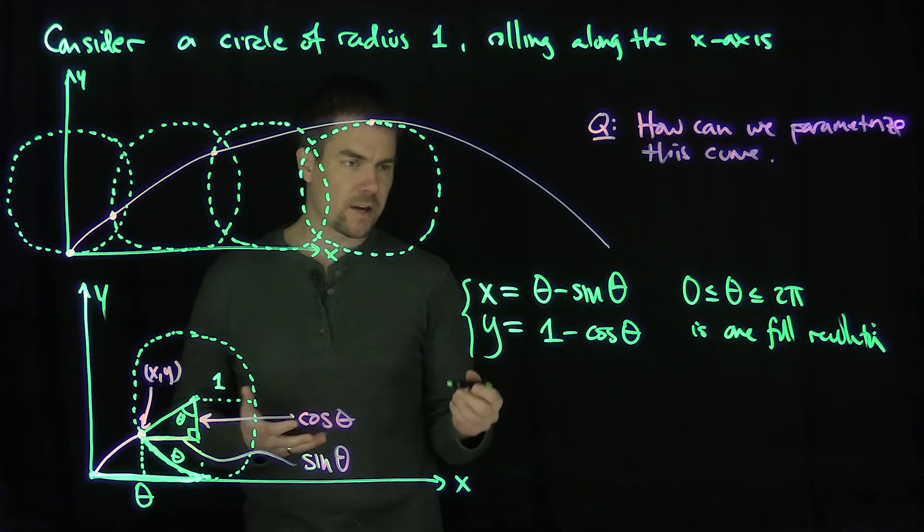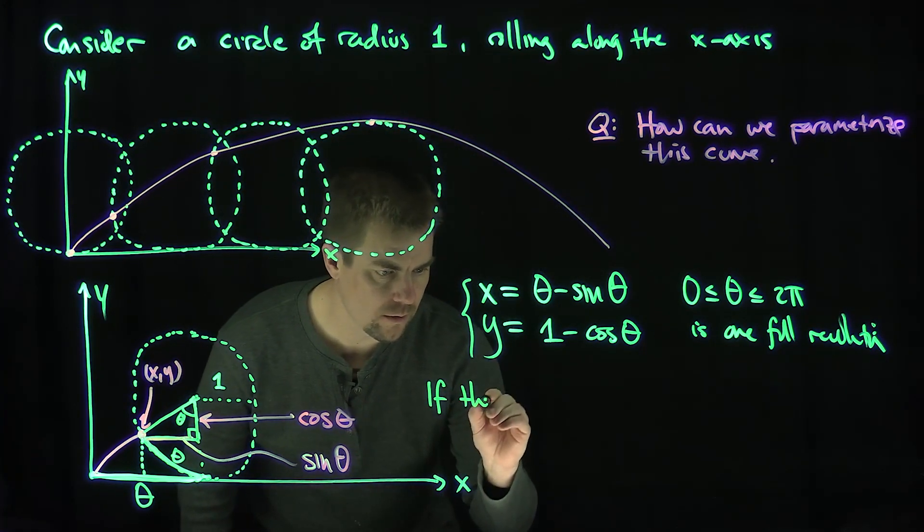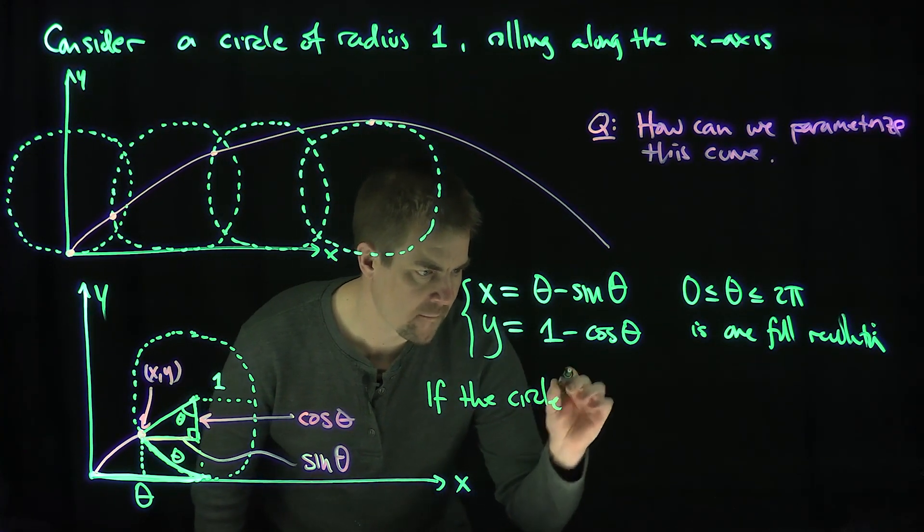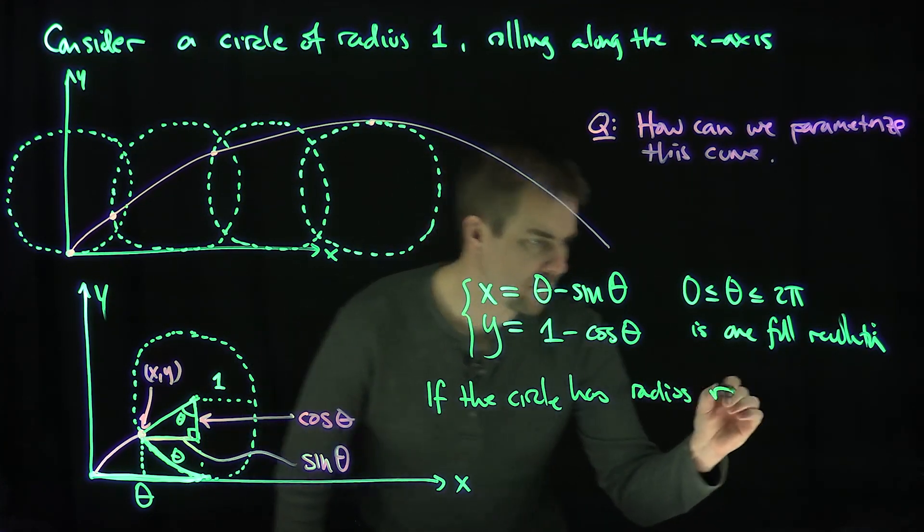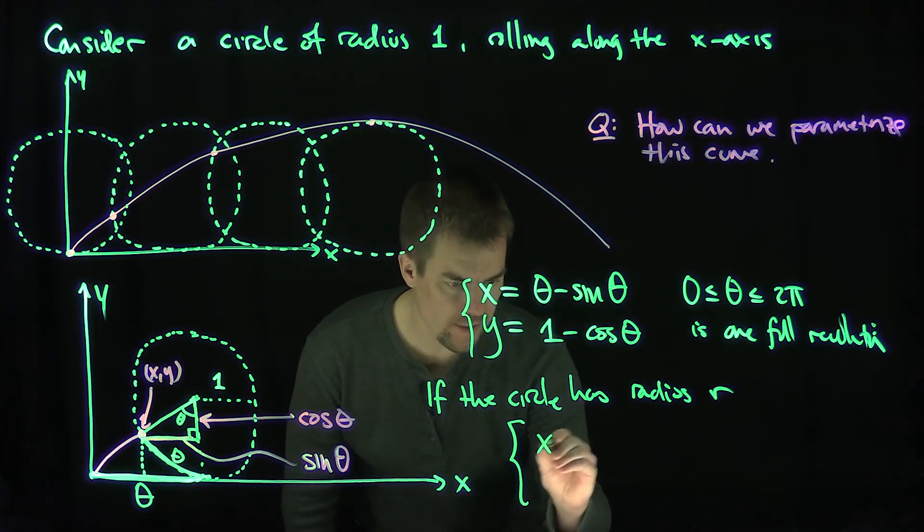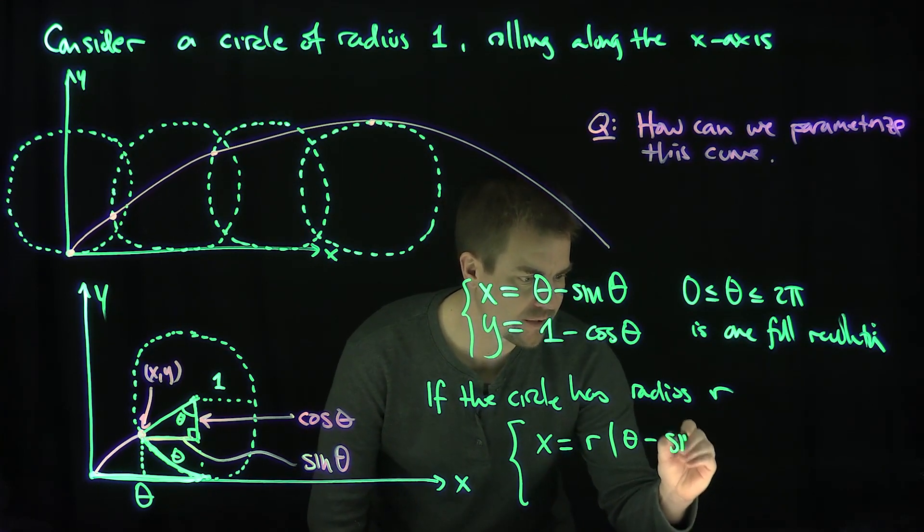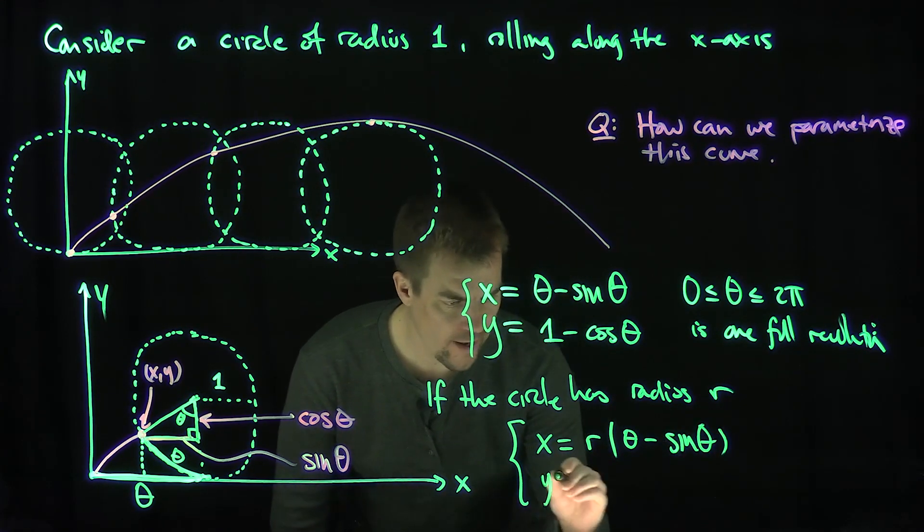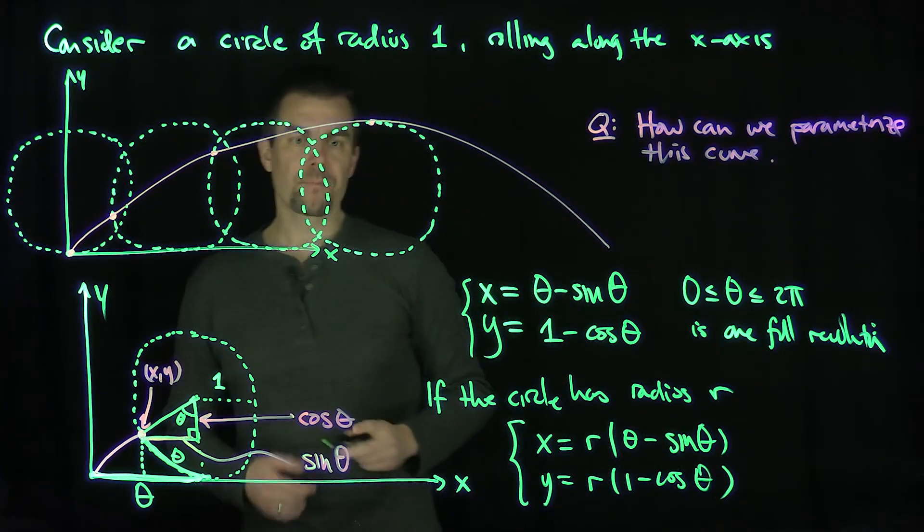Okay, now there's a modification to this. The modification to this is if the circle has radius r, if the circle is rolling, then it becomes, it's homogeneous, so it becomes x will be equal to r times theta minus sine theta, and y will be r times 1 minus cosine theta.